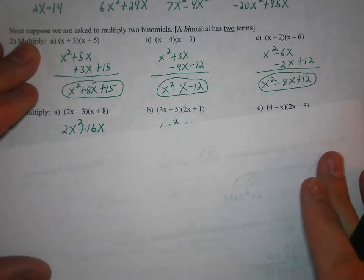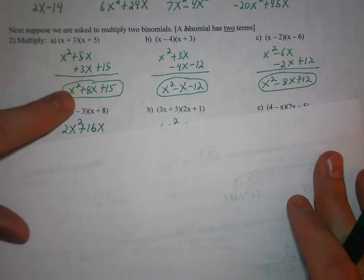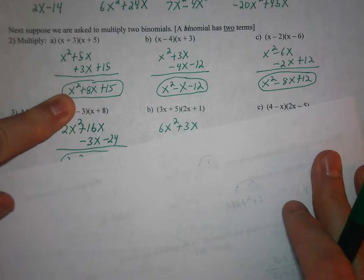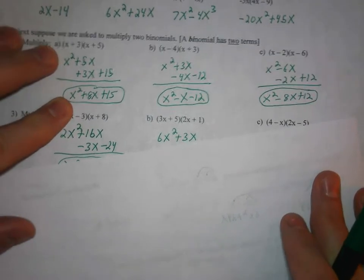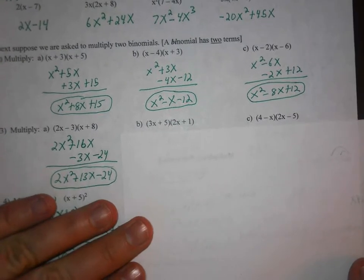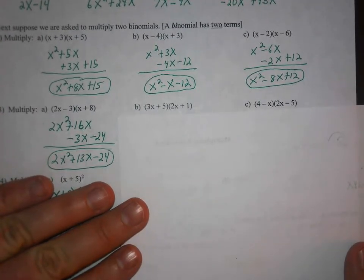And then cover up the 2x. And do negative 3 times x plus 8. And that'll be negative 3x minus 24. Okay, so then combine like terms. And there's your final answer.